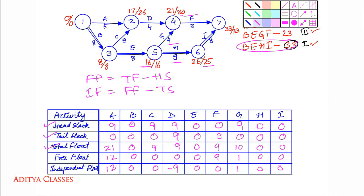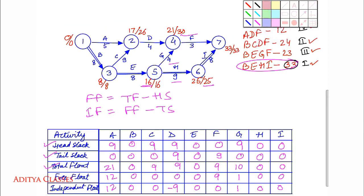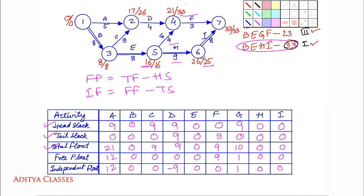So you can see once again that all critical activities B, E, H, and I, all these have zeros. There are no head slacks, tail slacks, none. Everything is zero. Because critical activities do not have any kind of leverage. They are stuck with the tightest possible schedule. Thanks for watching. Bye bye.